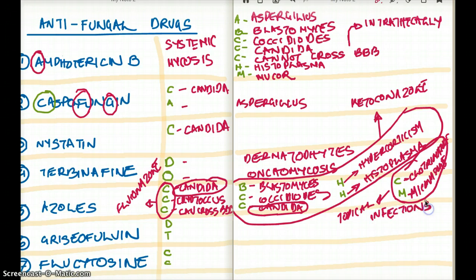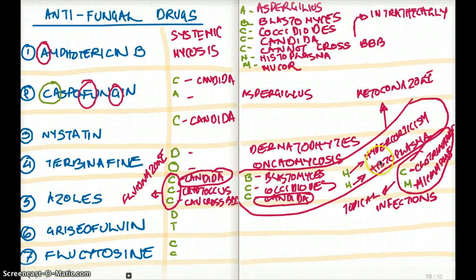So those are my clinical uses for my azoles. So here is the interesting one. We see that we even use azoles for hypercortisolism. Now why do we use it for hypercortisolism? It's because the azoles, ketoconazole, has the ability to inhibit steroid synthesis. So that's why we use it for hypercortisolism.